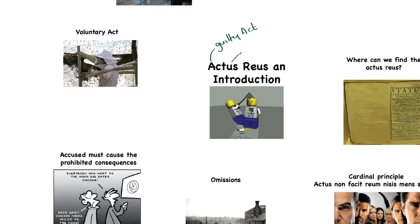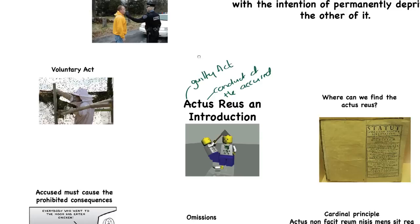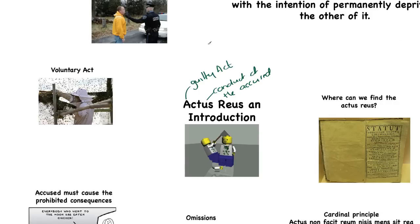In definitional terms, it covers the conduct of the accused. Don't get that mixed up with the notion of a conduct crime. This is talking about the behaviour of the accused. It can be an act of commission, doing something, or an act of omission, not doing something. And it must also be a voluntary act that causes the damage or harm.